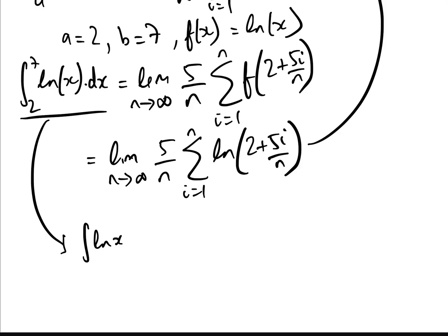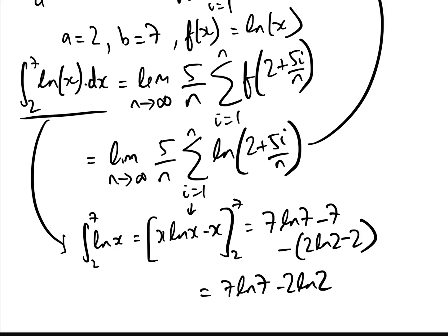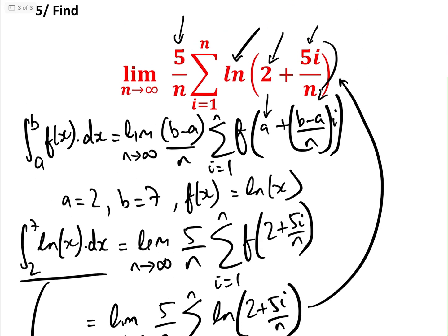The integral of log(x) is x·log(x) minus x, evaluated between 2 and 7. That gives (7·log 7 minus 7) minus (2·log 2 minus 2), which equals 7·log 7 minus 2·log 2 minus 5. That is the answer to the final limit. These questions fit a recognizable pattern and become relatively easy with practice. Please like and subscribe to the Gresti Academy YouTube channel.